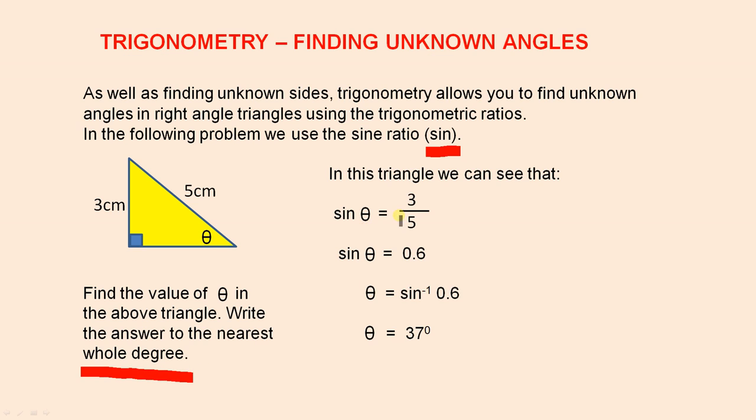So sine theta equals 3 over 5. Of course that's opposite over hypotenuse. Sine theta equals 0.6. So theta is the inverse sine of 0.6. So if you use your calculator to work that out, theta is 37 degrees to the nearest degree.